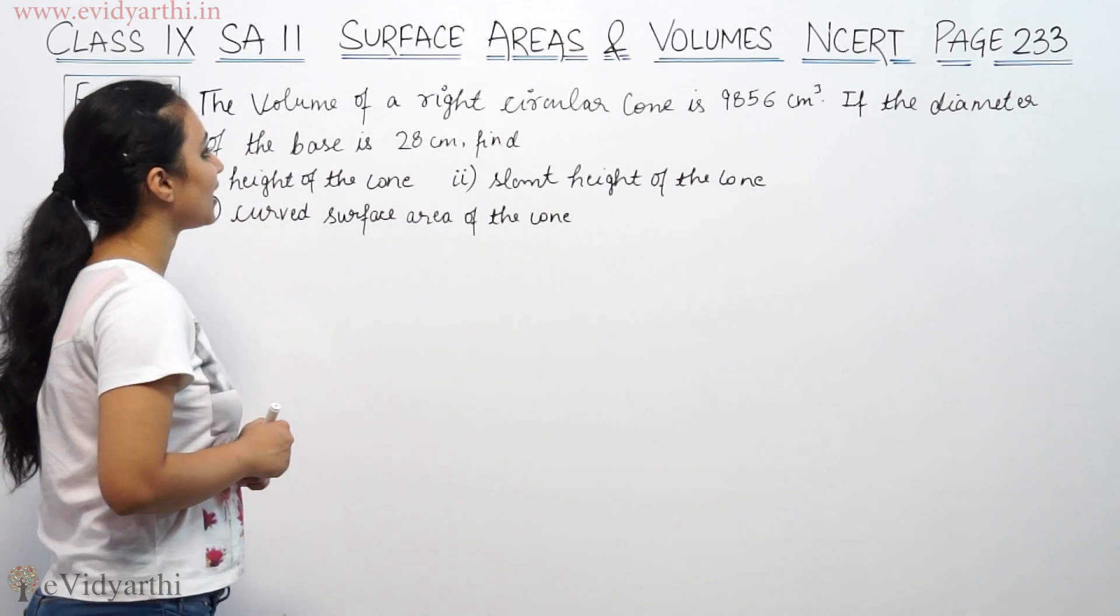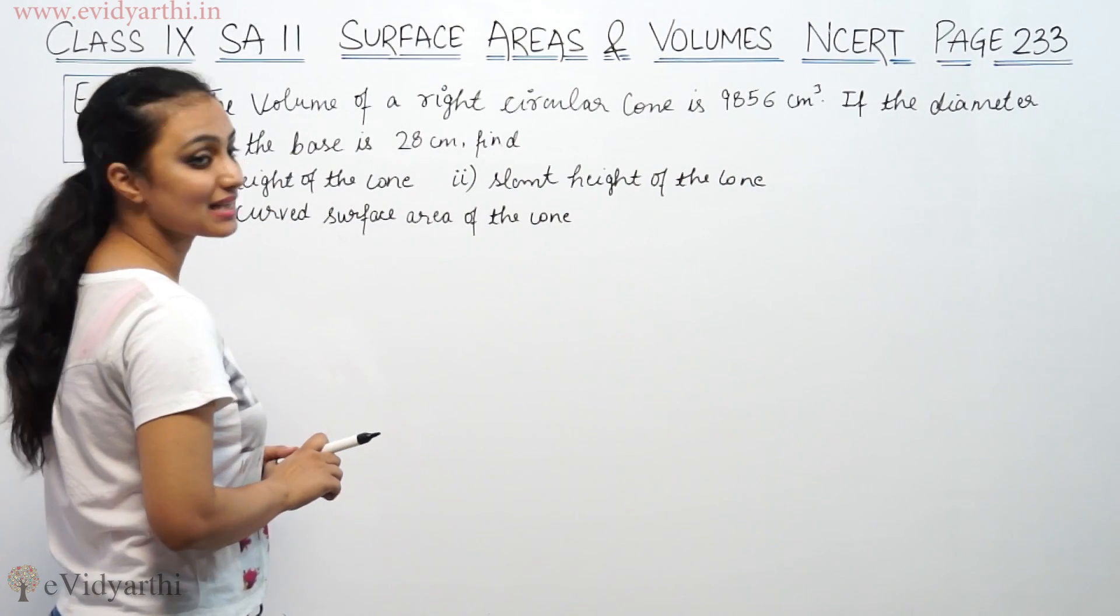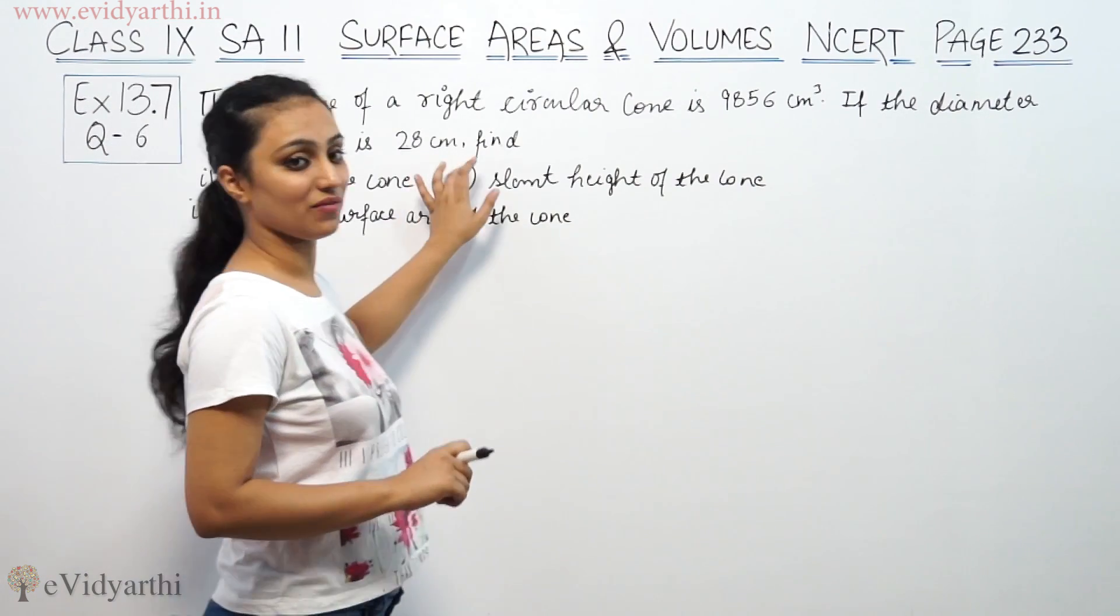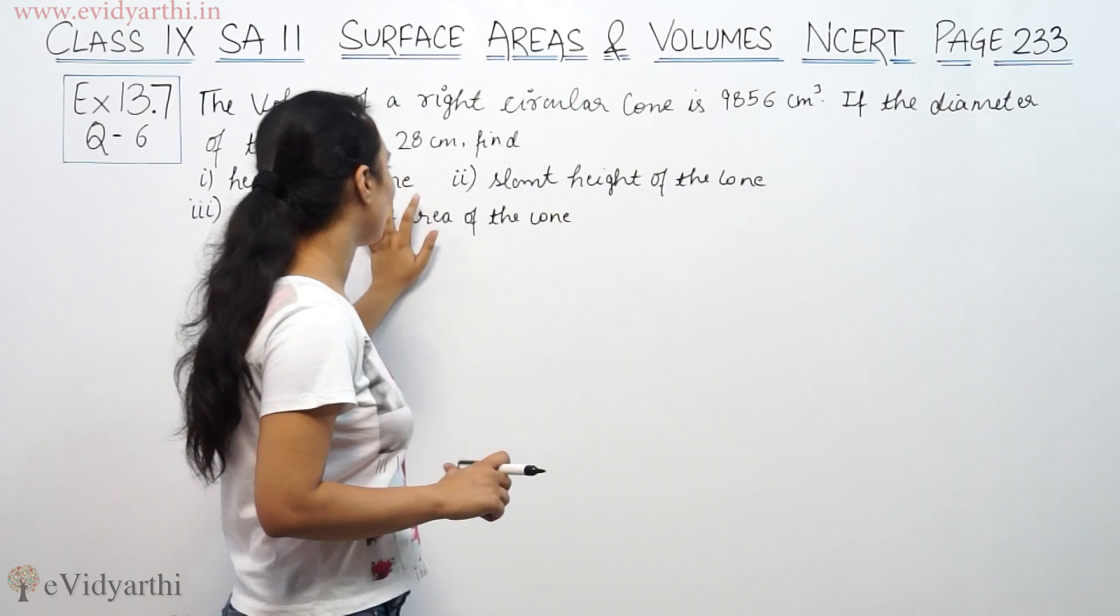The volume of a right circular cone is 9,856 cm³. If the diameter of the base is 28 cm, volume and diameter of base are given. We have to find the height of the cone and curved surface area of the cone.